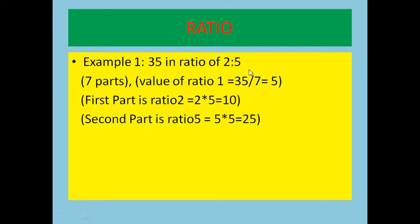Here is the next example: 35 in the ratio of 2 is to 5. Now, 2 is to 5 means 7 parts total. Then the value of ratio 1 will be 35 divided by 7, which gives us 5.